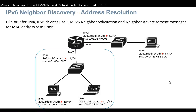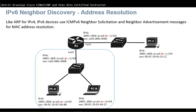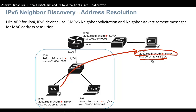IPv6 Neighbor Discovery address resolution works the same as in IPv4 — we need to map a layer 3 address to a layer 2 address. If a device knows an IPv6 address but needs the MAC address, it sends a Neighbor Solicitation to that device, which replies with a Neighbor Advertisement containing its MAC address. There is no ARP and no broadcast in IPv6. For a remote device, for example if PCA is trying to reach PCC, it asks for the MAC address of the local gateway, Router 1.